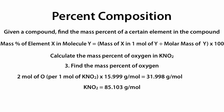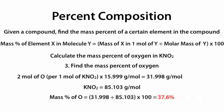Step 3: find the mass percent of oxygen. Using the equation, the mass percent of oxygen in KNO₂ equals the mass of oxygen in one mole of KNO₂ — which we calculated to be 31.998 grams per mole — divided by the molar mass of KNO₂, which is 85.103, all times 100, which equals 37.6% mass oxygen.